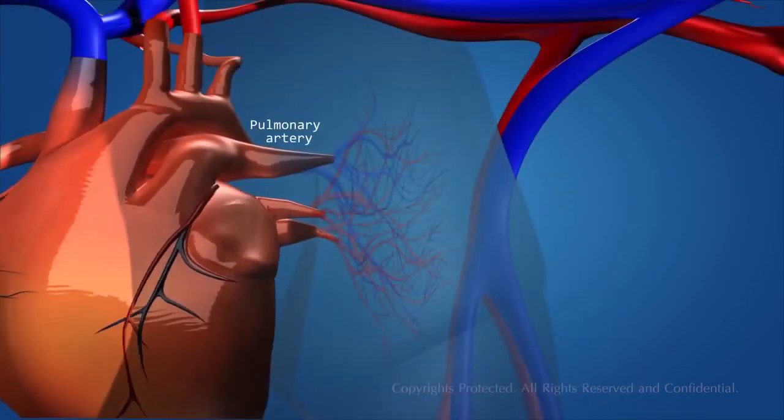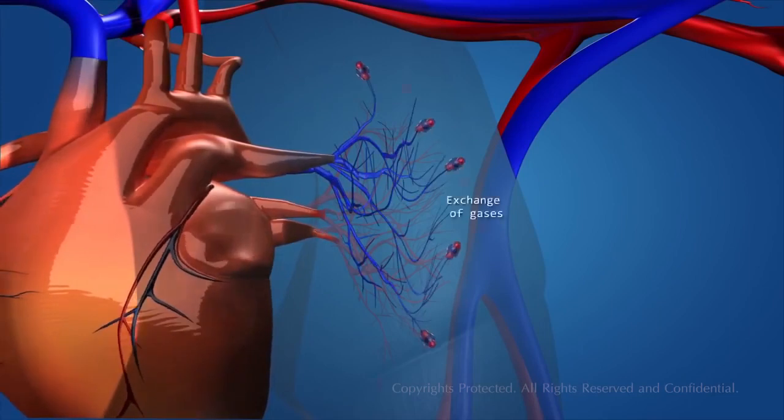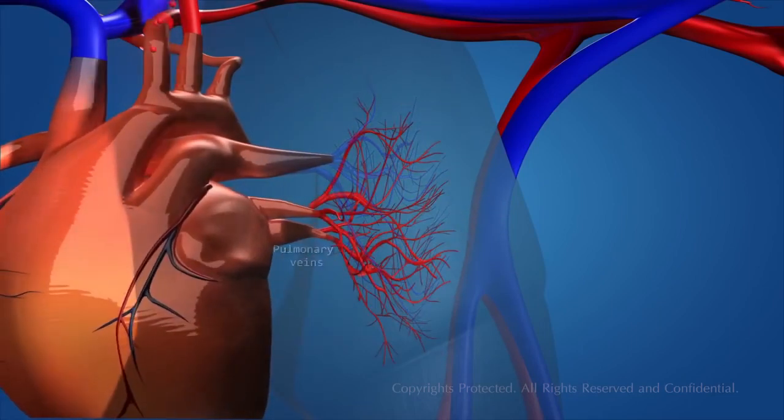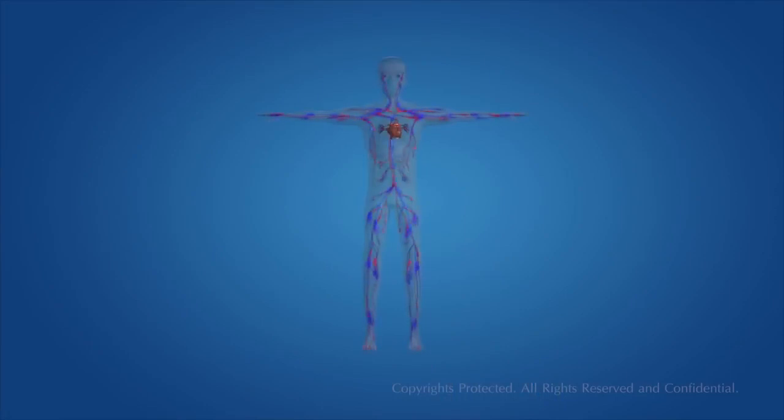The pulmonary artery carries the deoxygenated blood to the lungs for oxygenation. The lungs oxygenate the blood by exchanging gases and it flows back into the heart through the pulmonary vein, and starts the circulatory cycle all over again. Thank you.